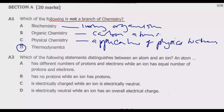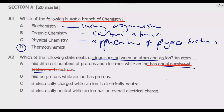Question A2: which of the following statements distinguishes between an atom and an ion? Option A states an atom has different numbers of protons and electrons, while an ion has equal numbers — this is incorrect. Option B states an atom has no protons, while an ion has protons — also incorrect. So A and B are both out.